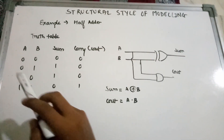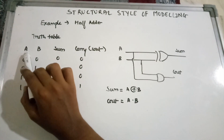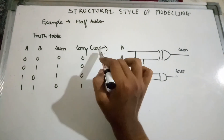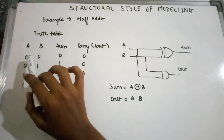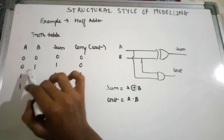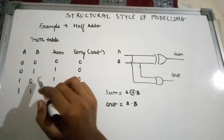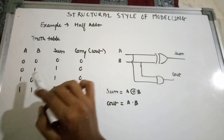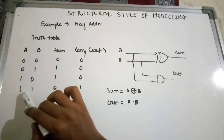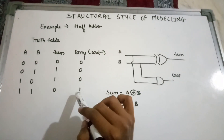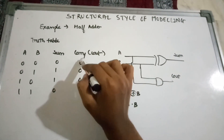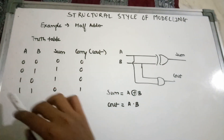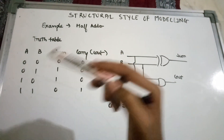The truth table of a half adder has inputs A and B, with outputs sum and carry (C out). So: 0+0=0, 0+1=1, 1+0=1, 1+1=0 with carry 1. The carry output is 0 for all other combinations.